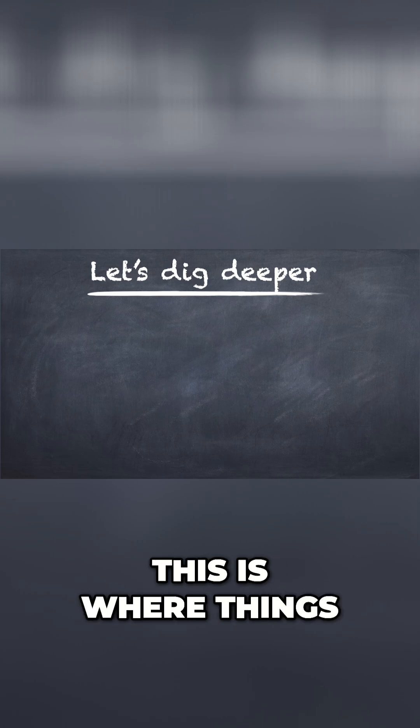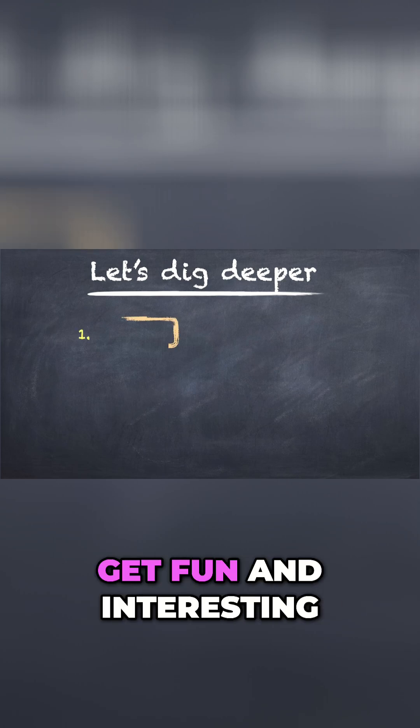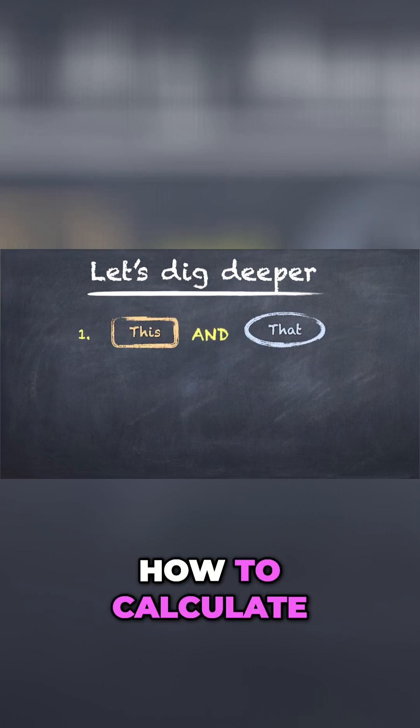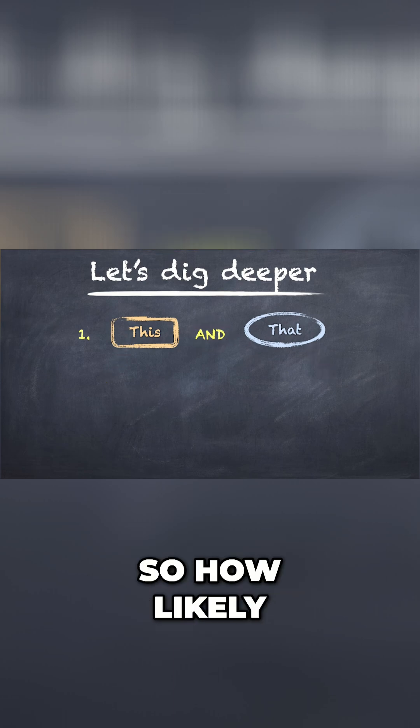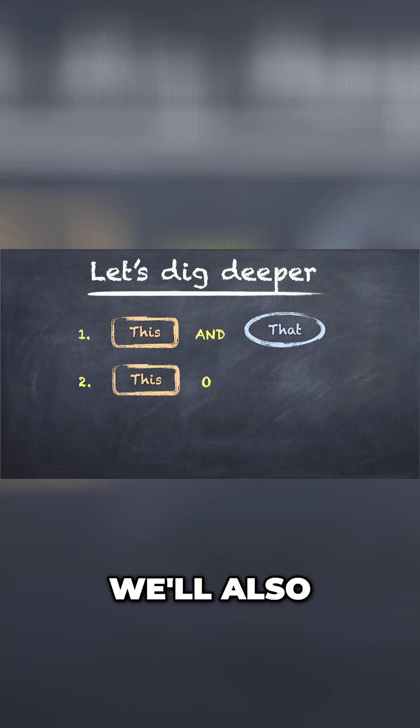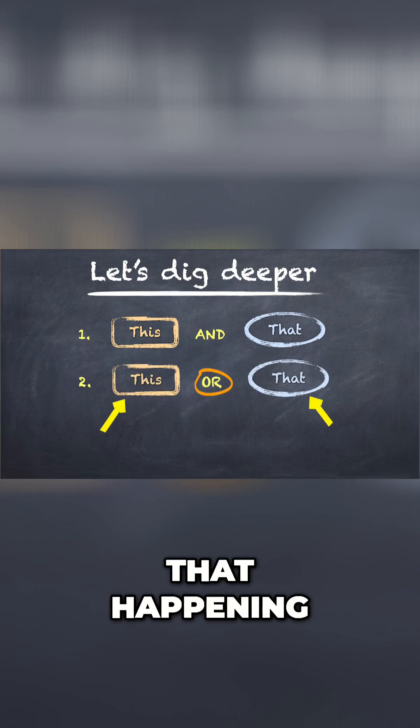Now let's dig a little deeper. This is where things get fun and interesting. In this video, we'll learn about how to calculate the probability of this happening and that happening. So how likely is it that if I toss a coin and roll a dice, then I'll get heads and get a 3.